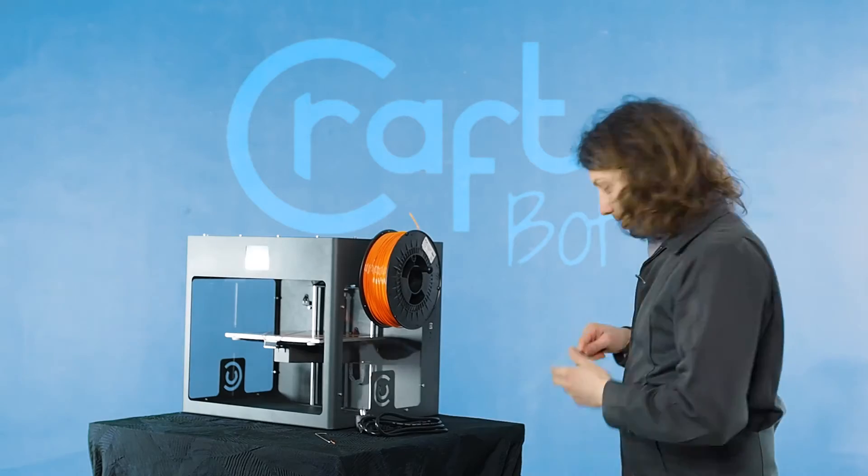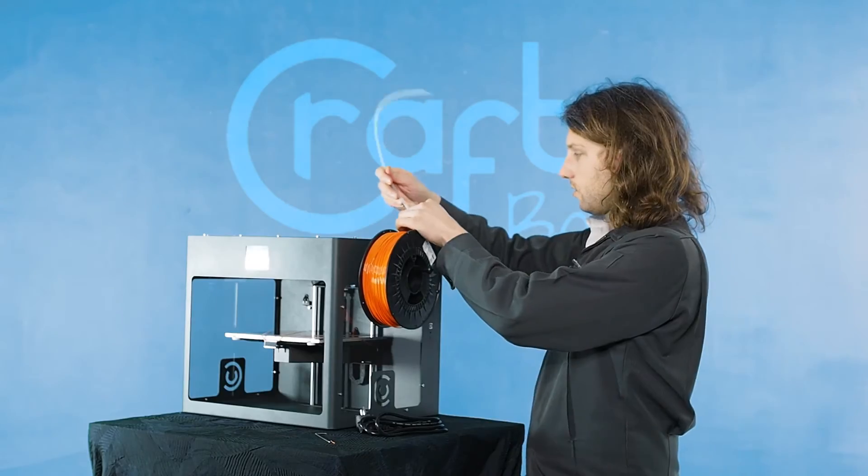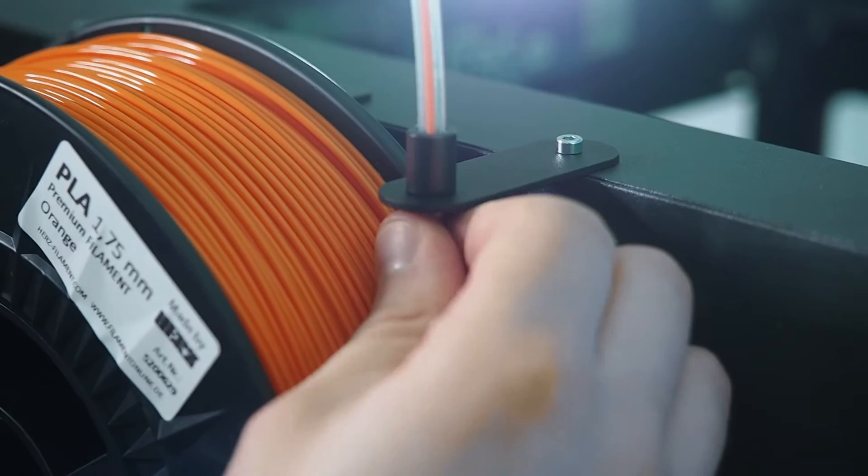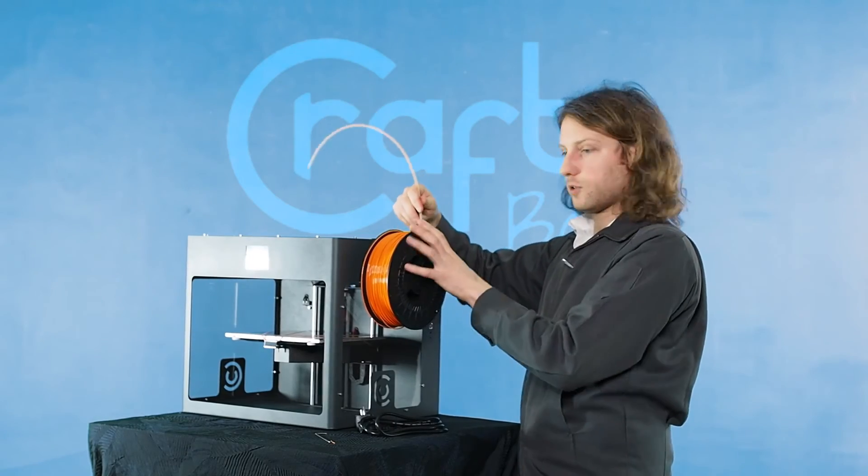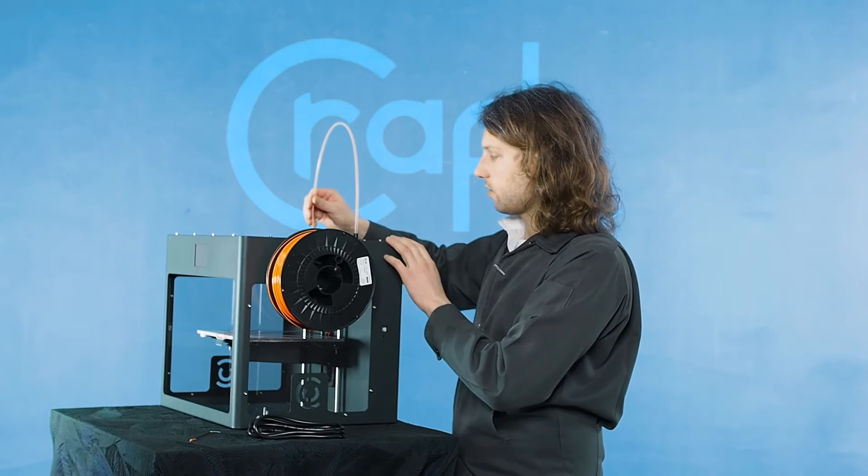You also have the tube that the filament goes through. You're just going to feed your filament right through there, put it up through the tube, and stick it right in the guide tube holder here. The other end is actually going to go into the extruder.